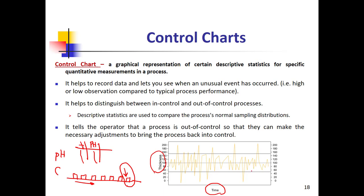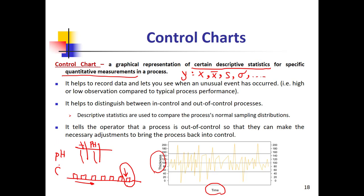So we can have different types of control charts — it is a graphical representation of certain descriptive statistics. The y-axis can be the parameter itself, the average, the variance, or some other parameters, for a specific quantitative measurement such as pH, concentration, oxygen, or nitrogen. It helps to record data and lets you see when an unusual event is happening in the process.